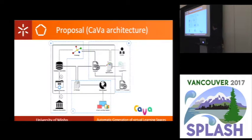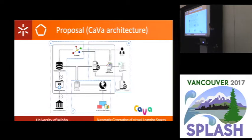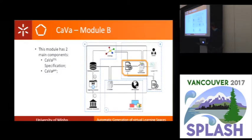Then we have Module B, the machinery — the main module of this proposal — which has two main components: the CAVA DSL specification and CAVA Gen, which is the process that will receive the CAVA specification as input and then generate the LS scripts, or the final virtual learning space. These two main components are worth talking about.